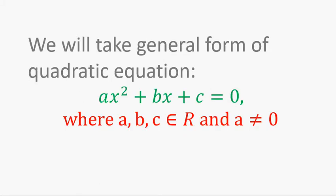To understand this, we will take the general form of equation ax² + bx + c = 0, where a, b, c belongs to the set of real numbers. But one thing to note here: a must not be 0, because in that case our equation will convert into a linear equation.